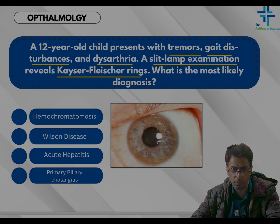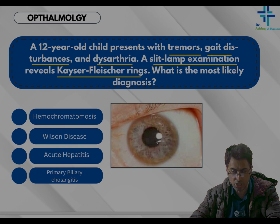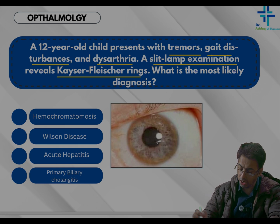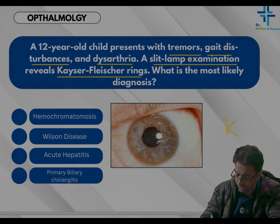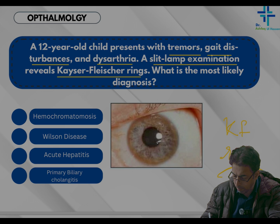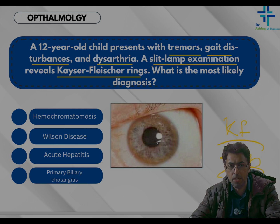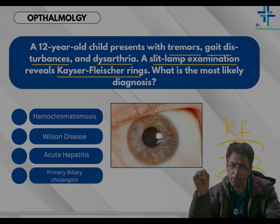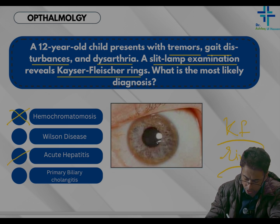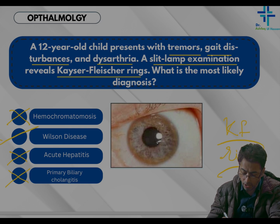Primary biliary cholangitis is something else — it is concerned with pruritus and a cholestatic pattern in the liver, and not the ophthalmological finding shown. This is a characteristic question testing your knowledge of KF rings. Wilson's disease is due to accumulation of copper, and Wilson's disease is hepatolenticular degeneration.